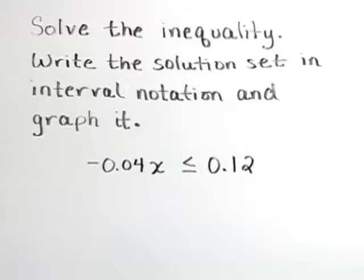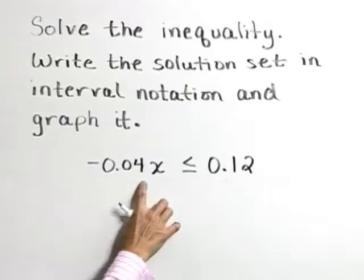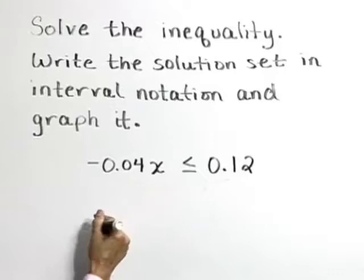Negative 0.04x is less than or equal to 0.12. Here I want to solve this inequality by dividing both sides by negative 0.04.